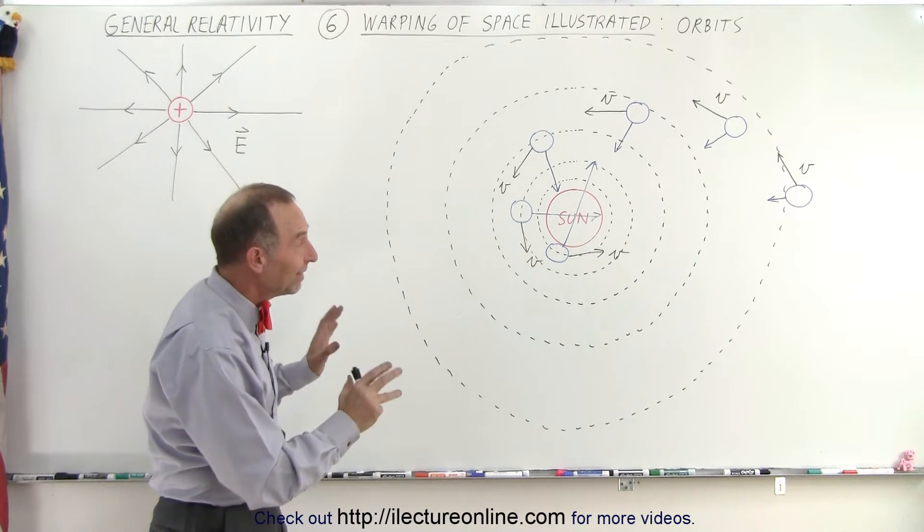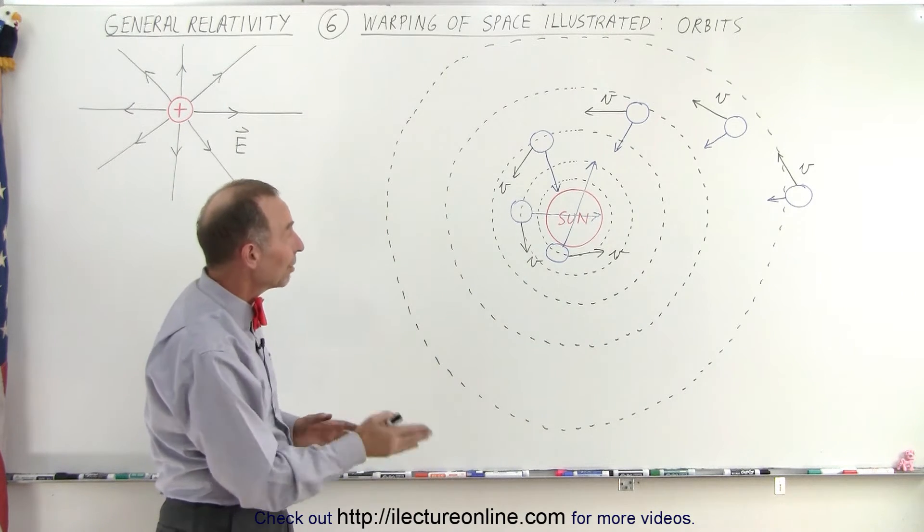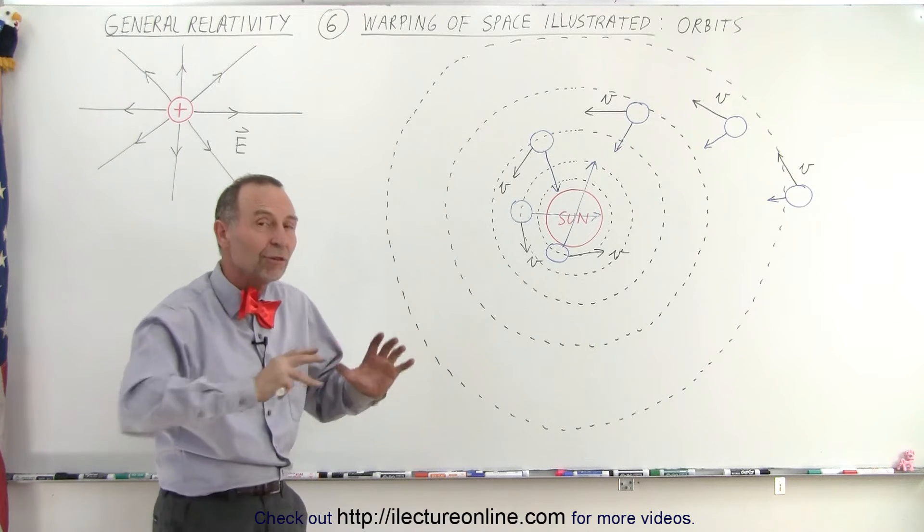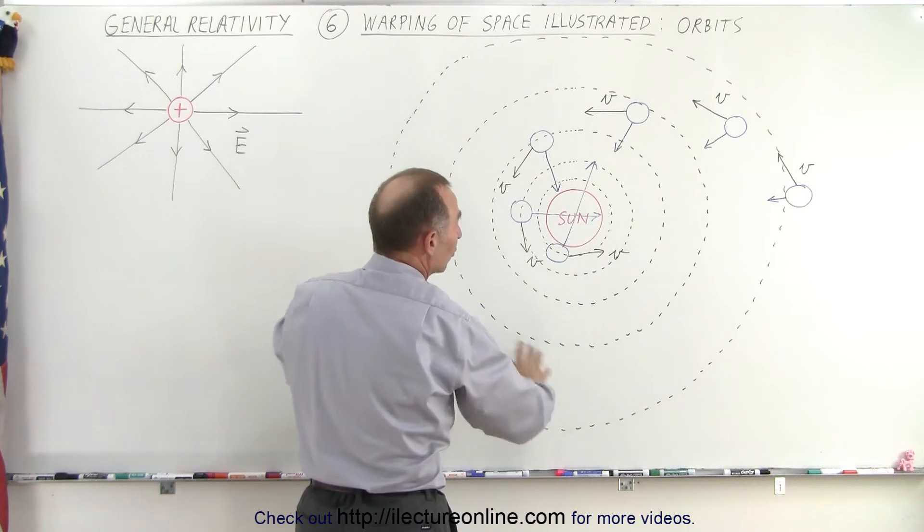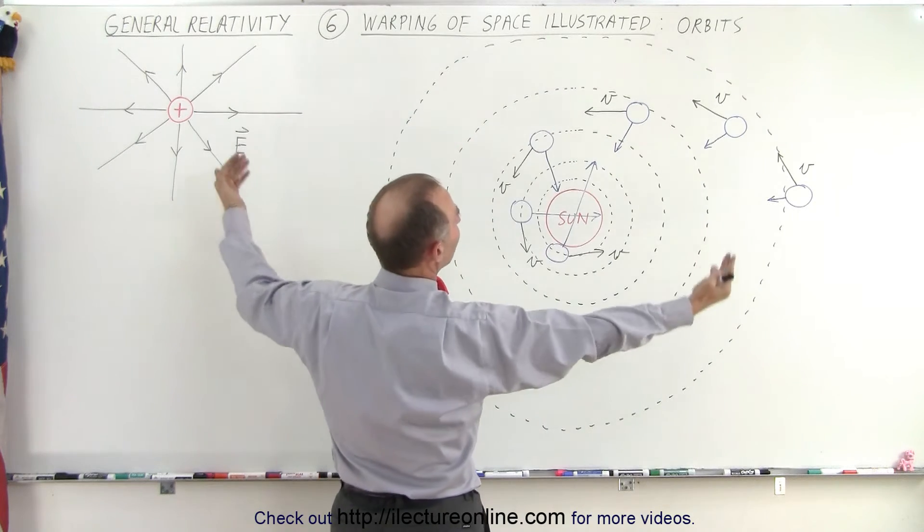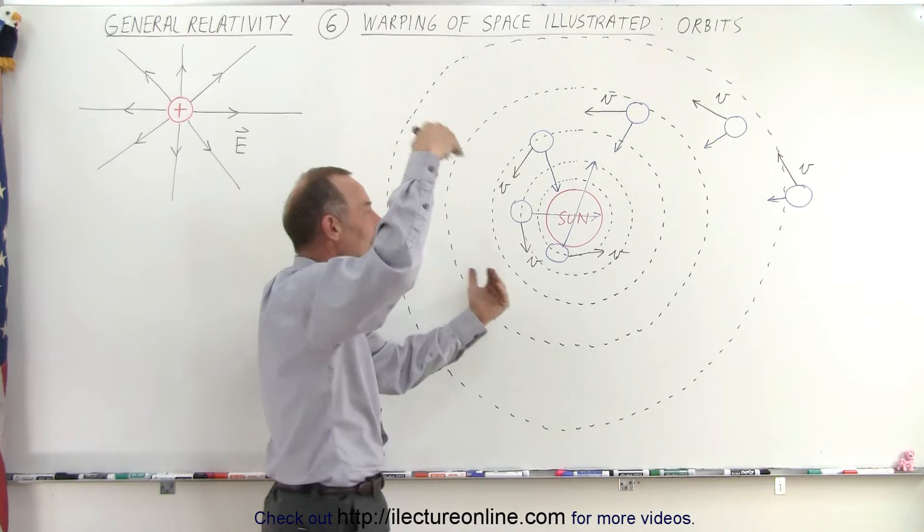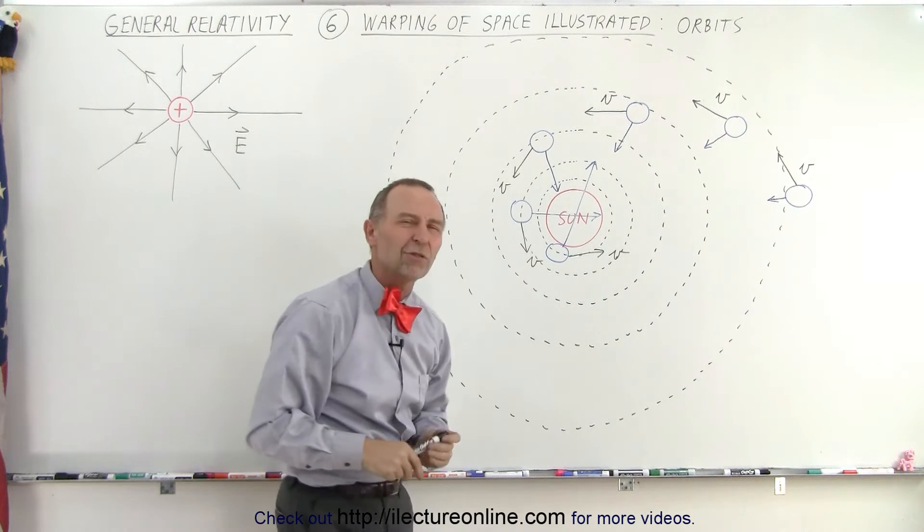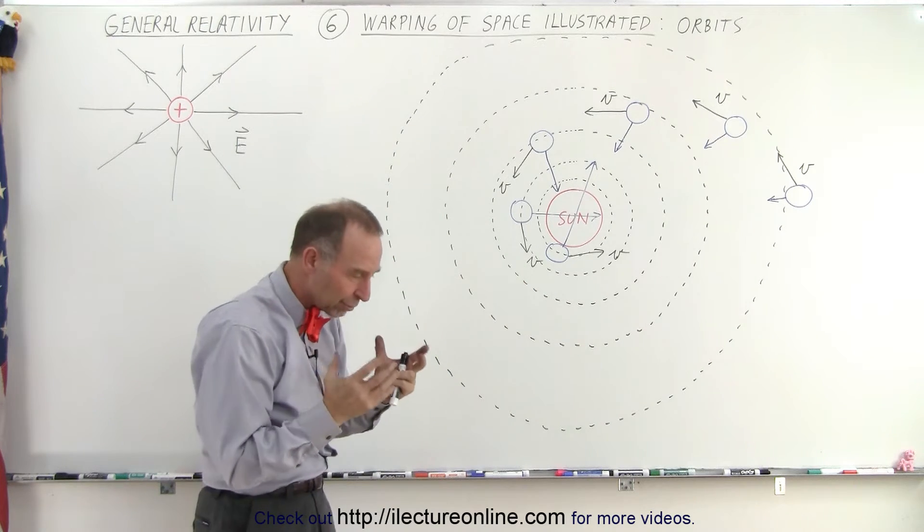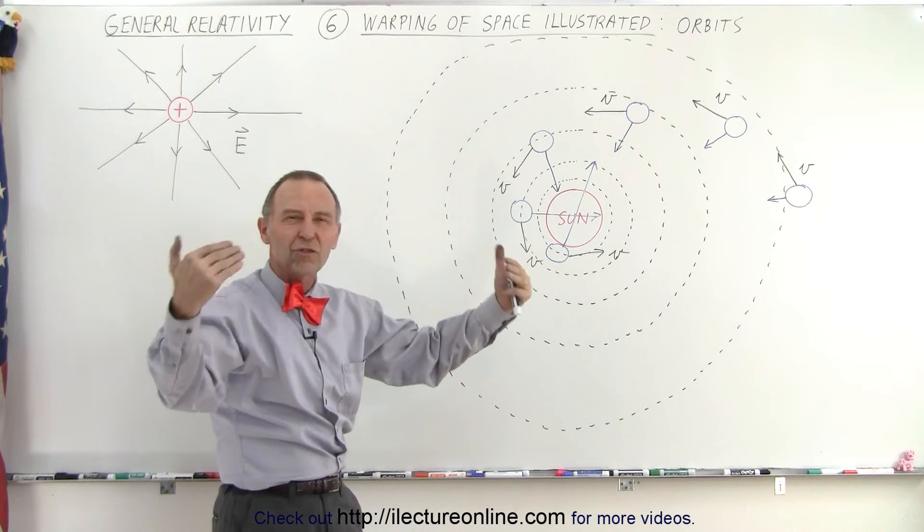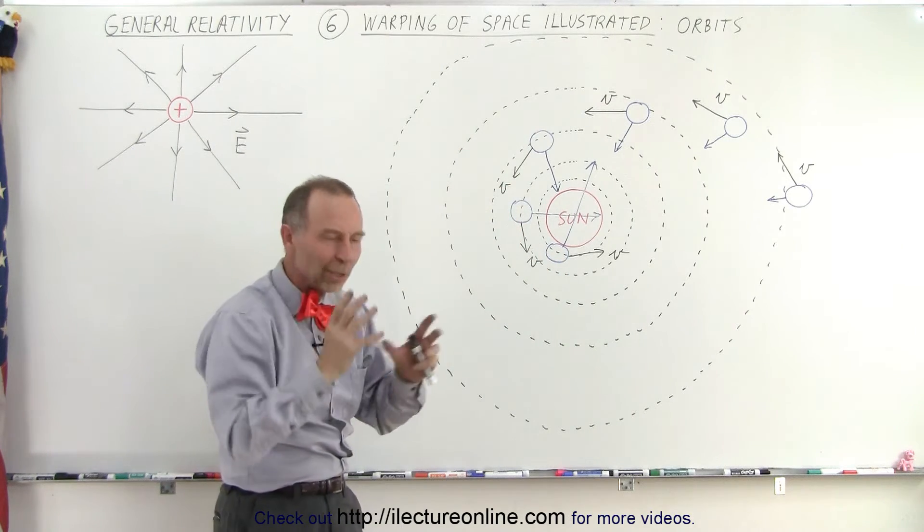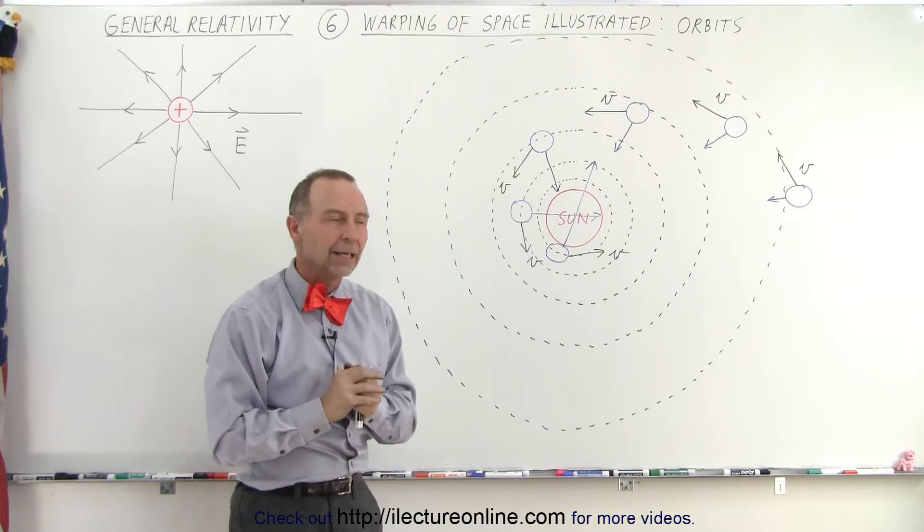This video right here and the video before gives you kind of a three-dimensional feel of how space is curved. Again, don't think of this as a two-dimensional region. Think of this as a spherical region. And the closer you get from any direction, the more space is curved. That's the difficult part to envision. If you envision it to be three-dimensional, how does space curve? How does that really happen? What does that look like?